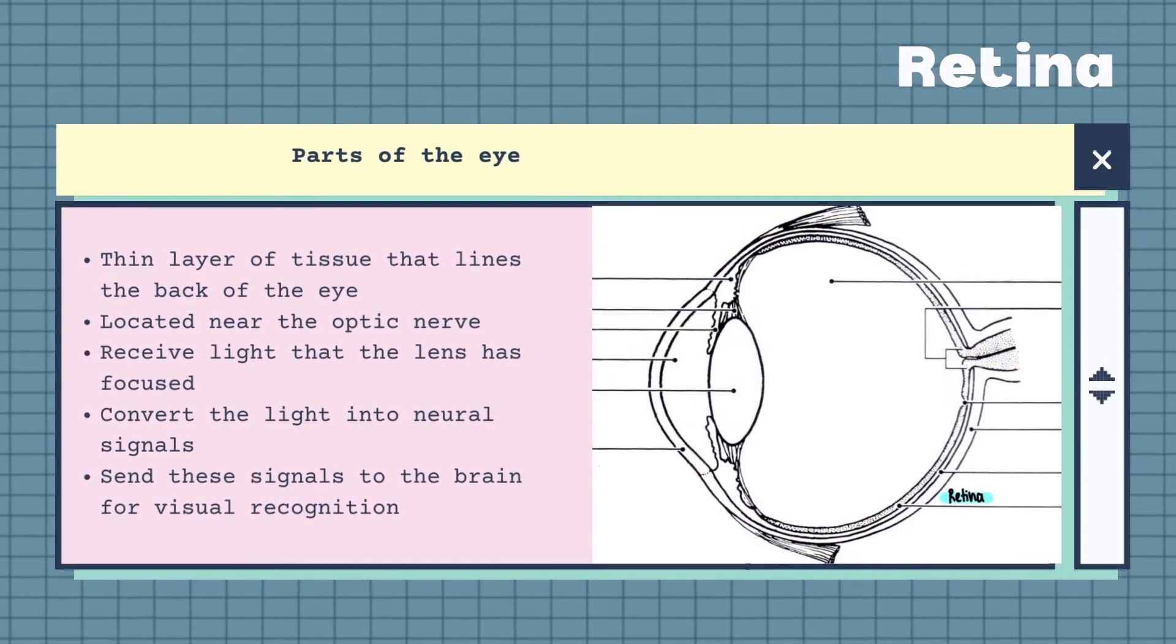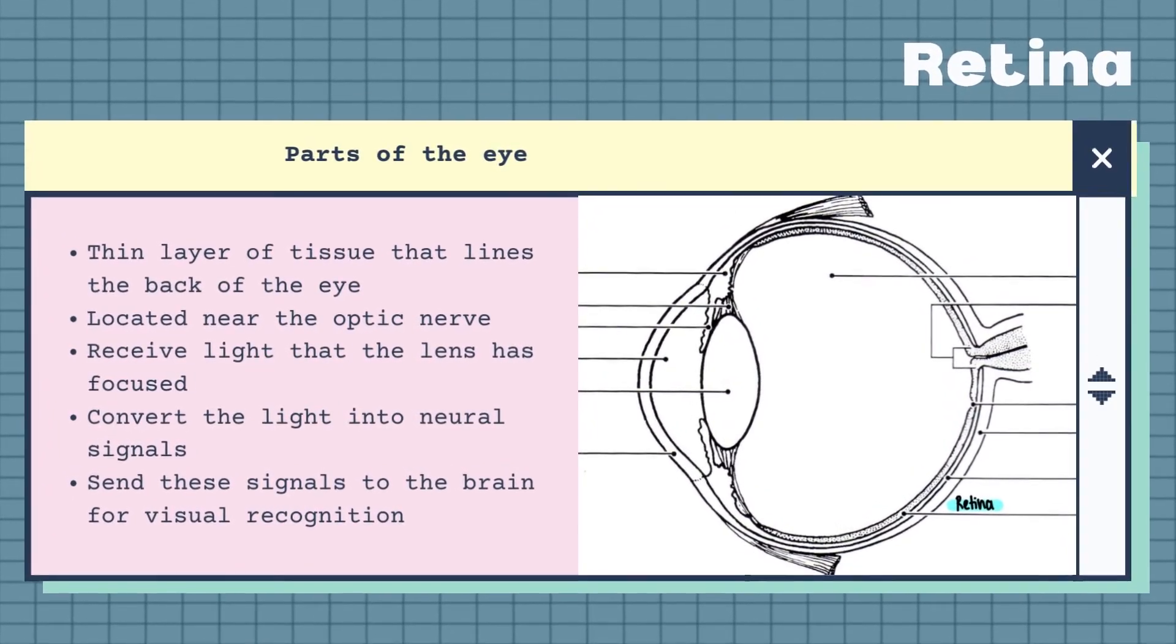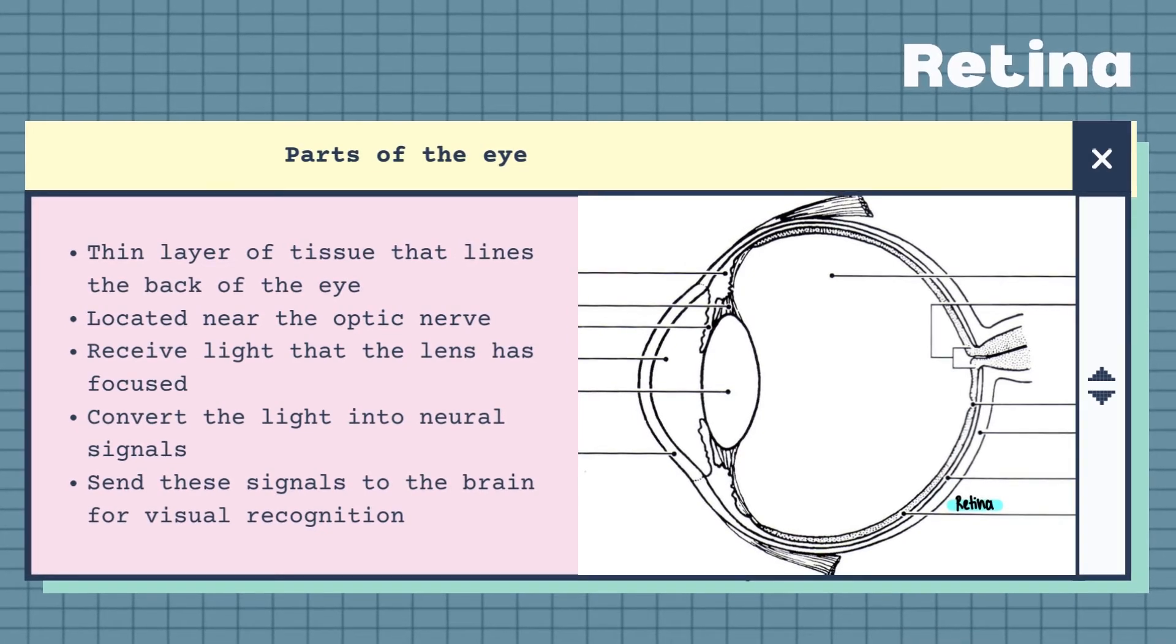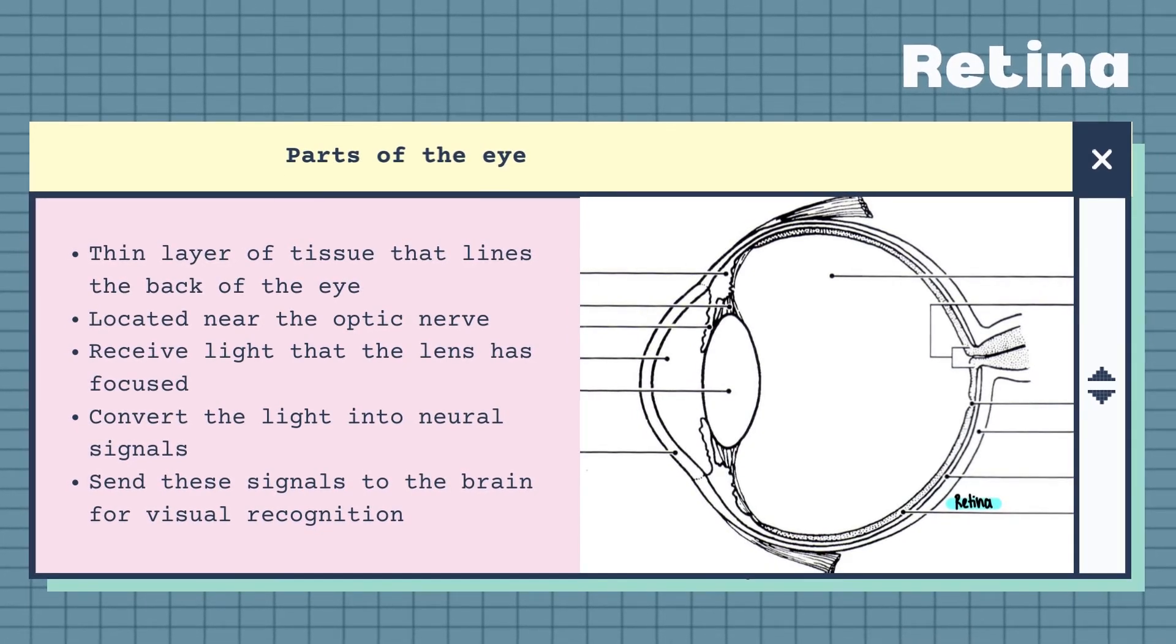The retina is a thin layer of tissues that line the back of the eye on the inside and is located near the optic nerve. The purpose of the retina is to receive light that the lens has focused, convert the light into neural signals and send these signals onto the brain for visual recognition.